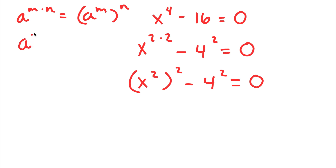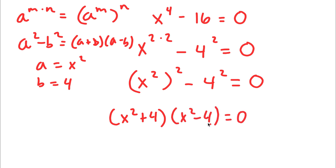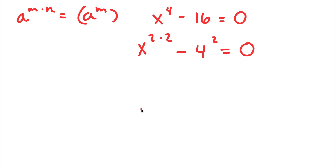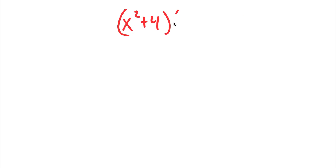Now, if I have something in the form a squared minus b squared, this is equal to a plus b times a minus b. In this case, a is equal to x to the power of 2 and b is equal to 4. So I have x to the power of 2 plus 4 times x to the power of 2 minus 4 is equal to 0.